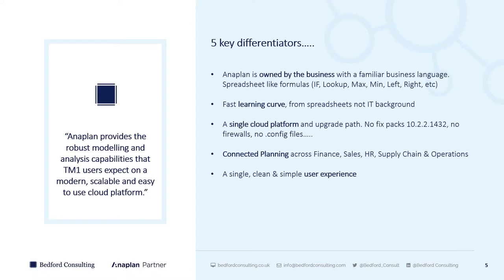Connected planning is a key differentiator. TM1 is traditionally a finance solution, though I know some use it for sales or supply. Anaplan truly enables connected planning: on the same platform, same code structure, same calculation logic, look and feel, and user experience — you can touch finance, sales, HR, supply chain, and operations. Being able to touch all those use cases and control the flow between each of those different points on a single platform is something I believe Anaplan stands alone in the market for.